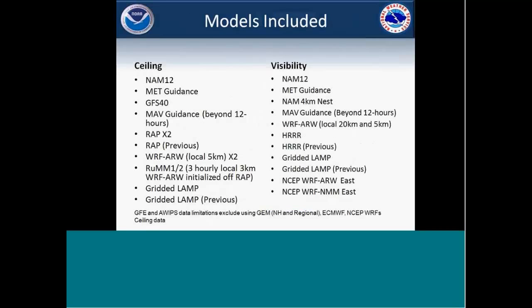Here's a list of the models included — it gives a general idea of what we do for both ceiling and visibility. It's mainly American models, and we also add in some of our local WRF runs that we do here at the office. Unfortunately, due to both GFE and AWIPS limitations, we don't use any of the Canadian model or the ECMWF and some of the other NCEP models, just due to a lack of model data that we get in.